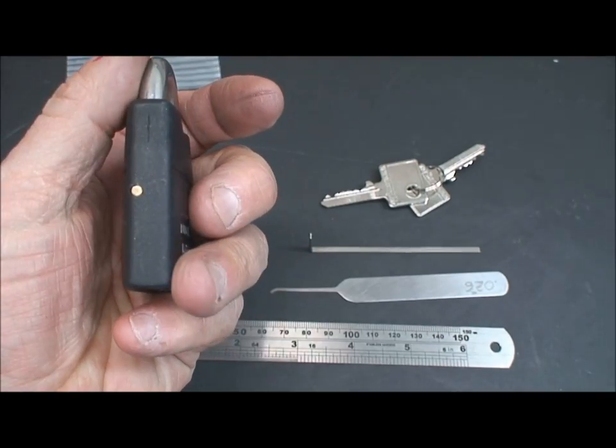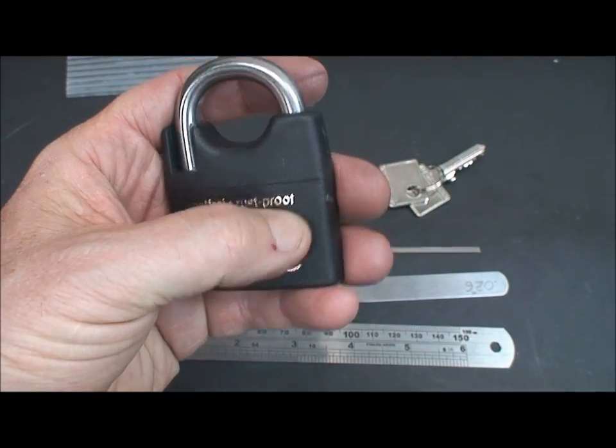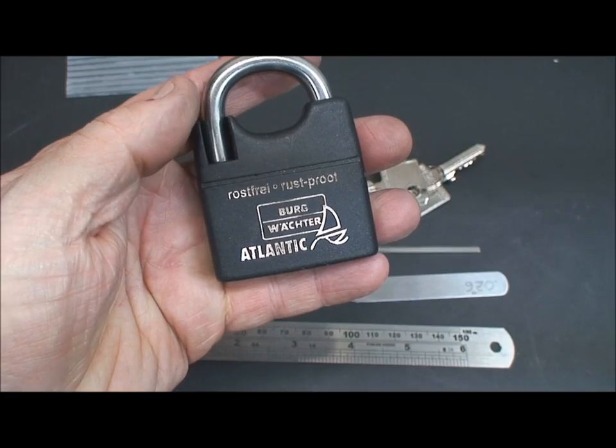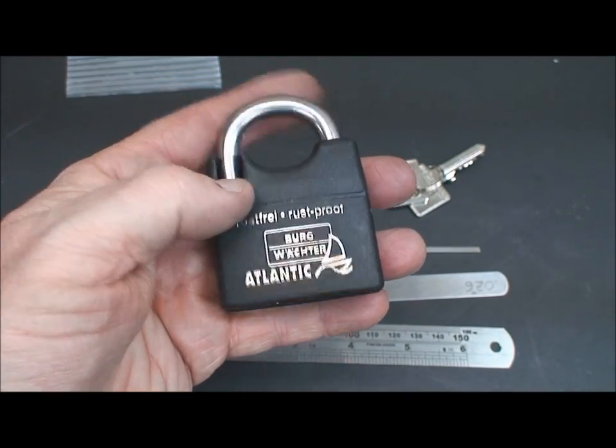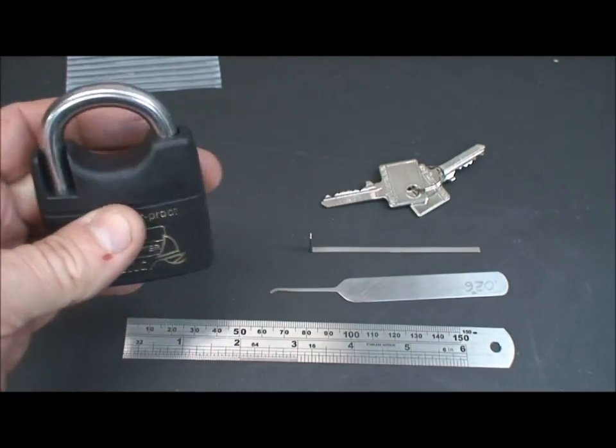The outer casing, although it might look like metal, this is a plastic weatherproofing thing so it can be used in a marine environment without any damage. Really nice lock.